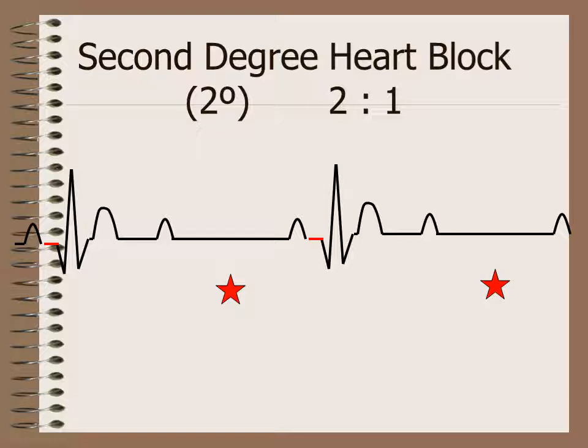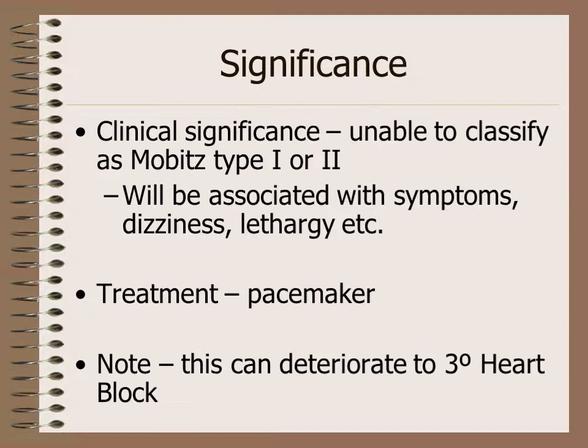The clinical significance of 2-to-1 second degree heart block is undeterminable in terms of type, but it is associated with symptoms like dizziness or lethargy as the degree of block is higher than other types. Sometimes treatment will be pacemaker, and the patient should be followed up closely as they can progress easily to third degree heart block.